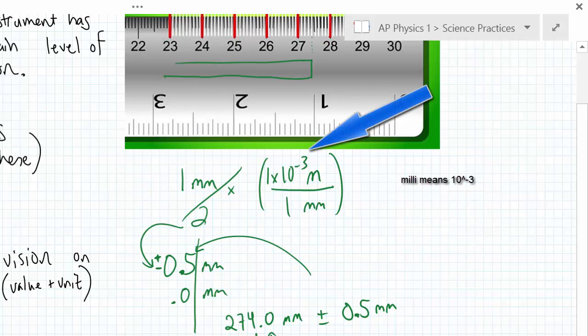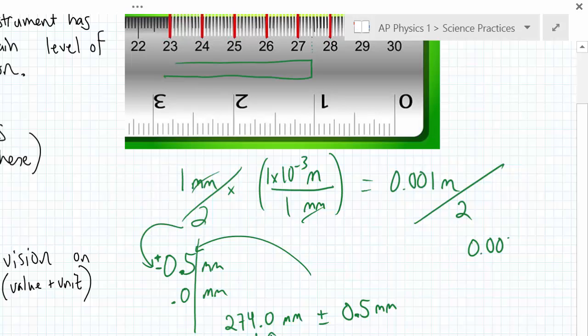See how I did that? So if I multiply this out, I'm going to get 0.001 meters, is the same thing as a millimeter. I can follow the same procedure. Divide that by 2, and I'm going to get 0.0005.